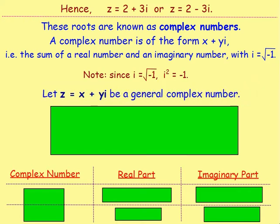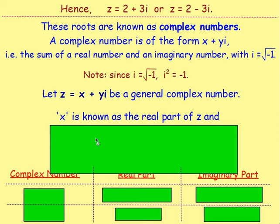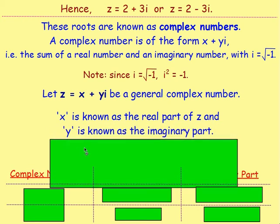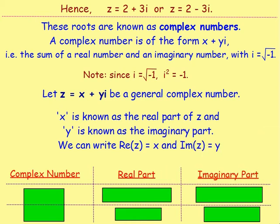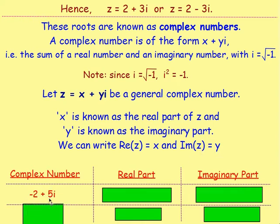Let Z be a general complex number — so a general complex number would be x + yi. x is known as the real part of Z, and y is known as the imaginary part. We can write down what the real part and the imaginary part are. Let's try a couple of examples. Take the complex number −2 + 5i. What is the real part?